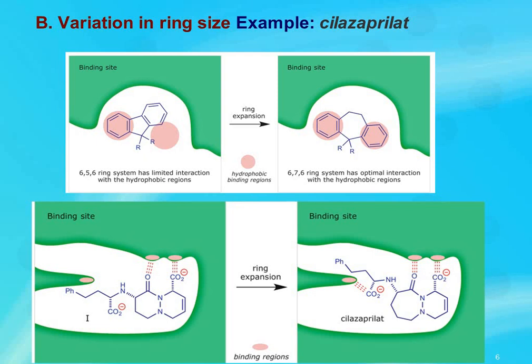With the extension strategy, we can also go for variation in ring size. If a drug has one or more rings that are important to binding, a common strategy is to make analogues with the ring expanded or contracted. The principle behind this approach is much the same as varying the substitution pattern of the aromatic ring in that the position of substituent groups are finely adjusted and the angles slightly changed. Expanding or contracting a ring may put other rings in different positions relative to each other and lead to better interaction with specific regions in the binding site.